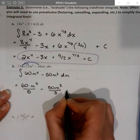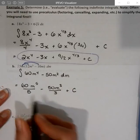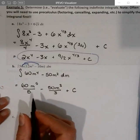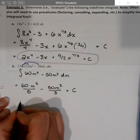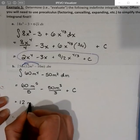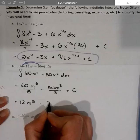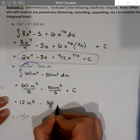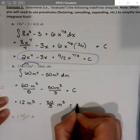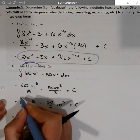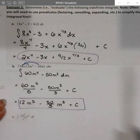Simplify where possible. So I have 60 divided by 5, that's 12, m to the 5th, minus 50 thirds, m to the 3 plus c. And then we have our simplified integral.